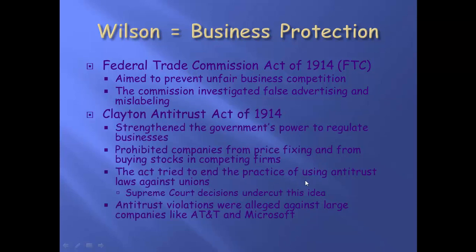Wilson also gives more bite to the Sherman Antitrust Act by coming up with the Clayton Antitrust Act. It gave the government even more power to regulate businesses — stopping companies from price-fixing and forming or buying stocks at other firms, stopping illegal activities that businesses were doing simply to make money but at the expense of consumers. The Act tried to end the practice of using antitrust lawsuits against unions, but the Supreme Court severely undercut that idea until the 1930s. Antitrust violations were later alleged against large companies like AT&T and Microsoft.